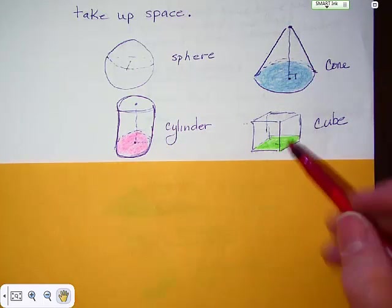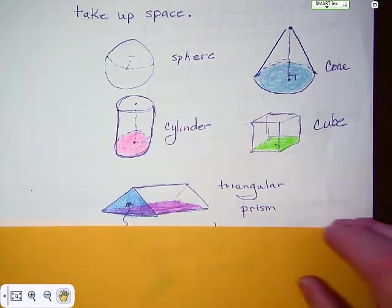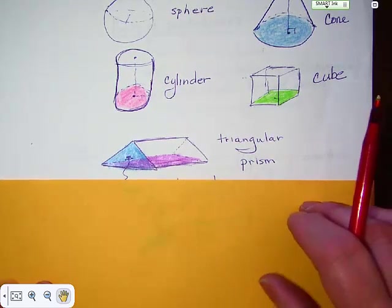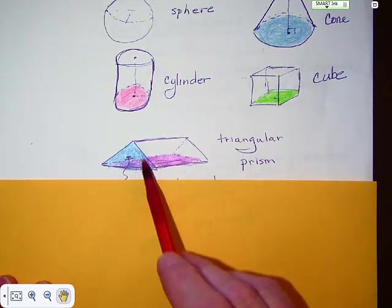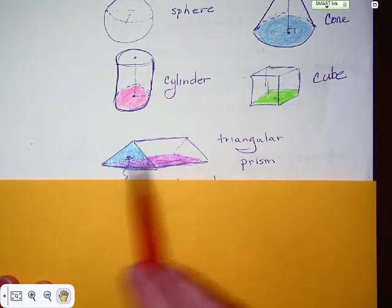You have cubes, and that would be the base here. And you have a triangular prism, and I colored it two different colors because I wanted to point out something. Your base is actually this blue end right here, and your height is going to be this rectangular.